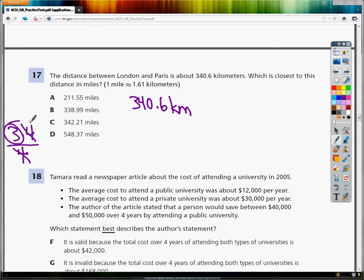So this is 340.6 kilometers over one, and now I'm going to set up the one mile is the same as 1.61 kilometers in a way that I can get rid of that kilometers.